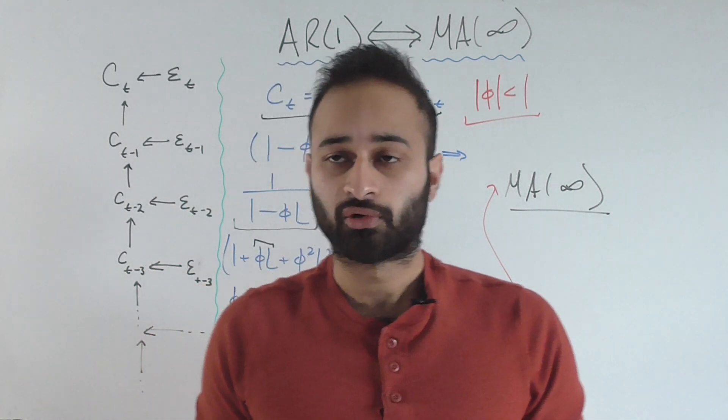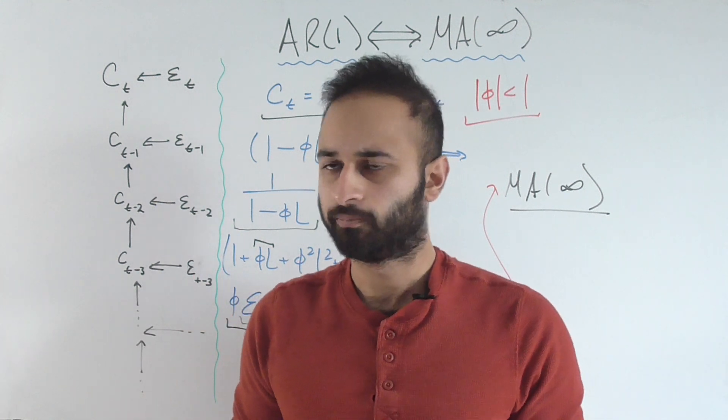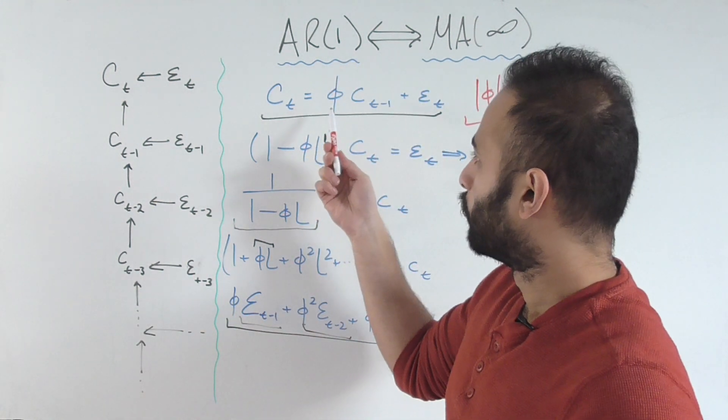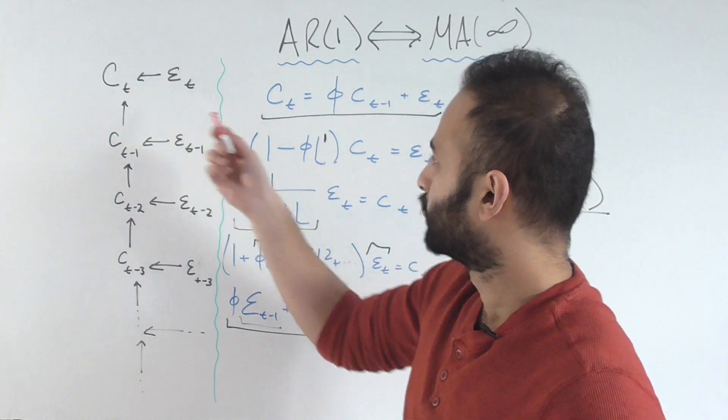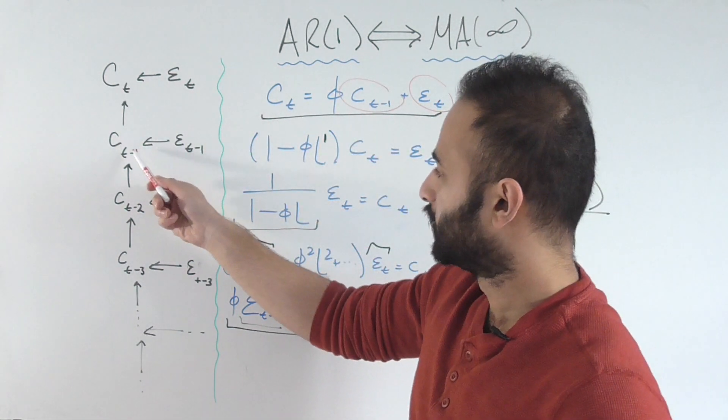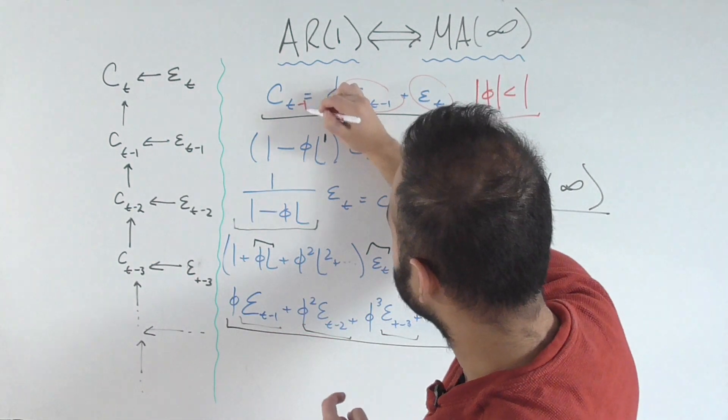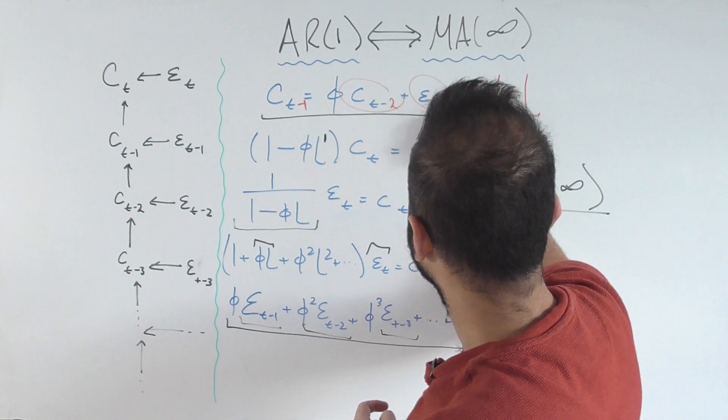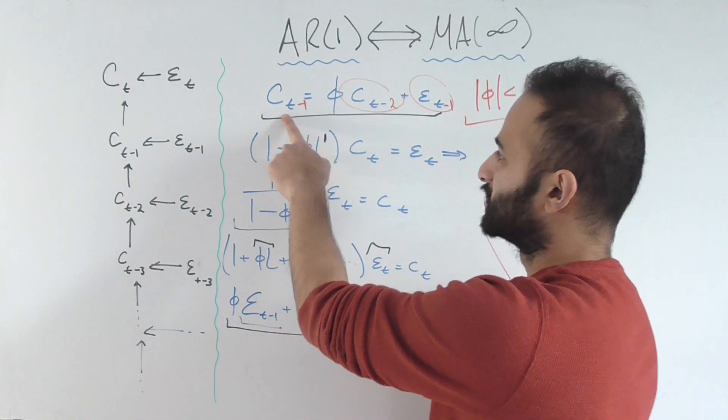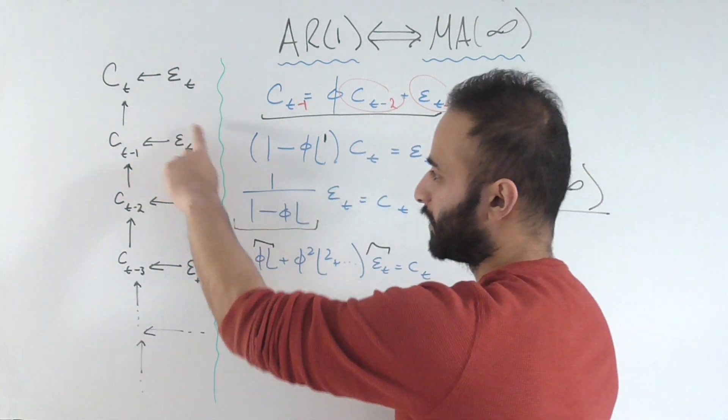Let's look at the causal function tree to understand why this might be true. With the AR1 process, c_t is a function of ε_t and c_t-1. That's what these arrows are for. If I were to write t-1 everywhere here, that becomes t-2, t-1. We see that c_t-1 is a function of c_t-2 and ε_t-1. That's what's happening right here.